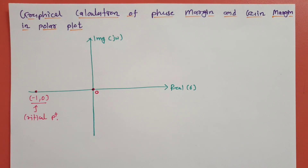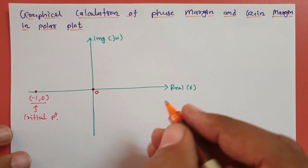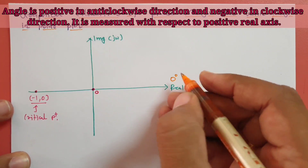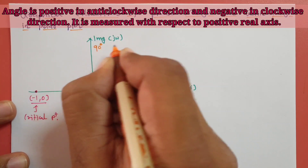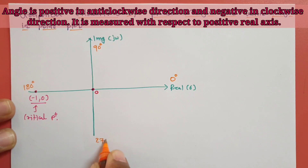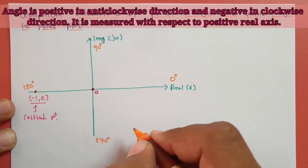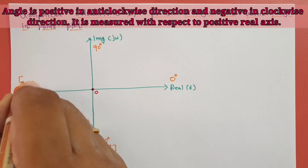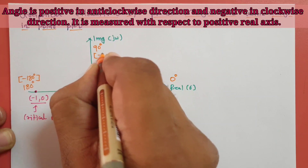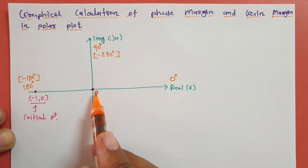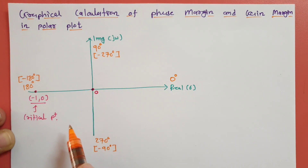There are a few more interesting points to know. Phase is measured with respect to the real axis. The angle will be 0 degrees here, plus 90 degrees here. In the anticlockwise direction, angle is positive — so 180 degrees here and 270 degrees here. In the clockwise direction, the angle is negative: minus 90 degrees, minus 180 degrees, and minus 270 degrees. Magnitude is the distance from the center.